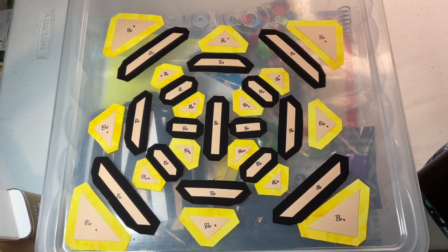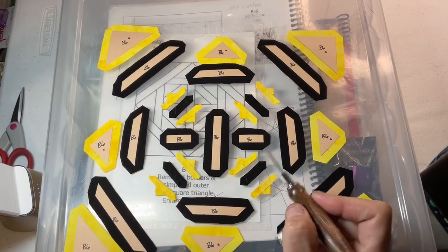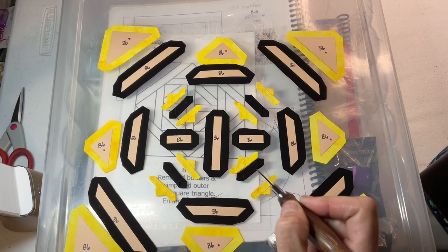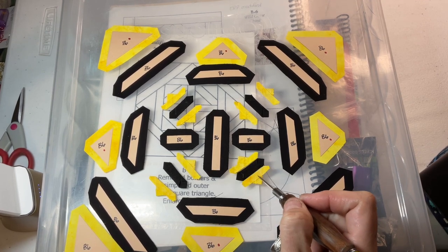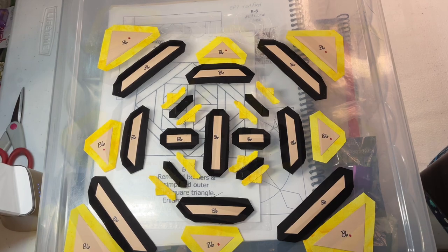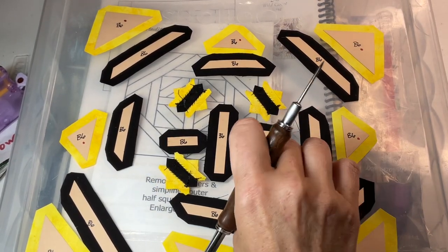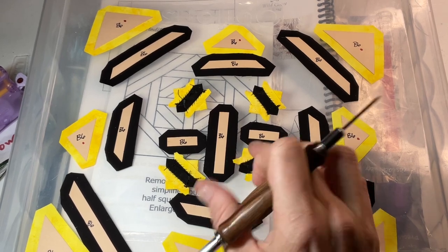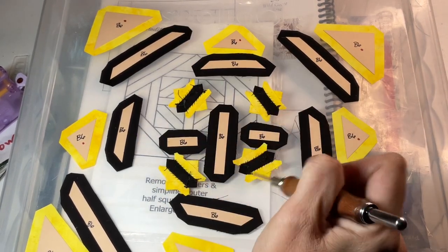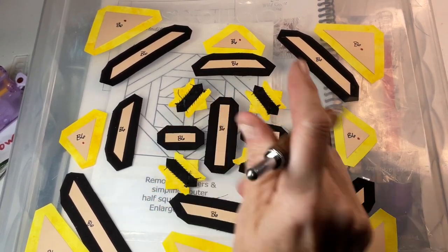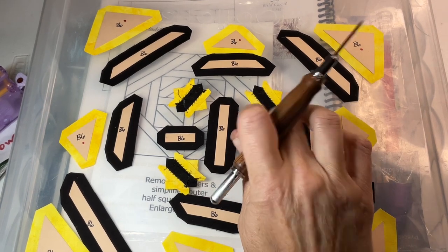I'm going to baste these three pieces of each square so I can make these into squares and assemble those and get going on this center section. So I basted all of these pieces. Now I'm going to go around and stick them together into squares. I've got my squares made and I'll make sure I keep them in the right configuration because they're going to be a diamond around the center.